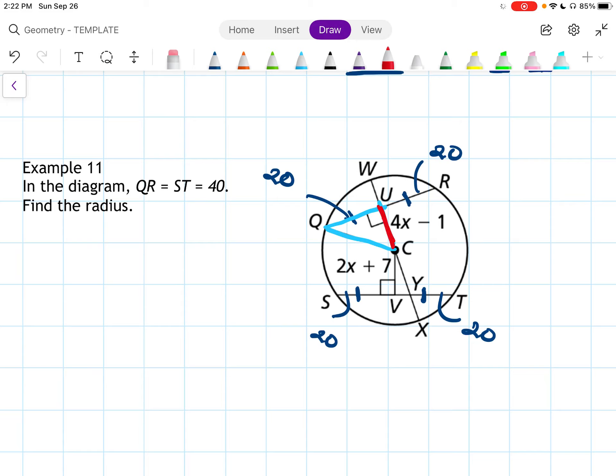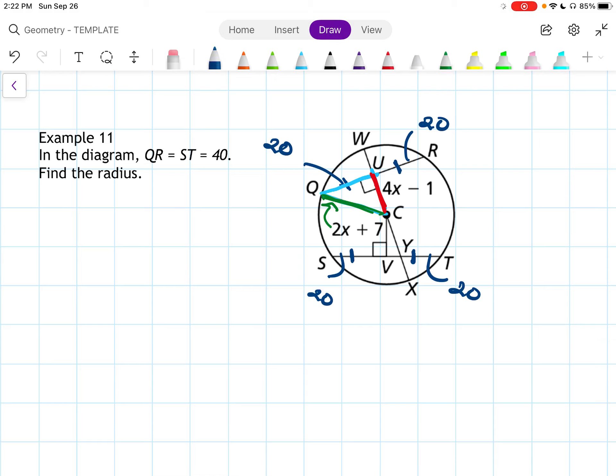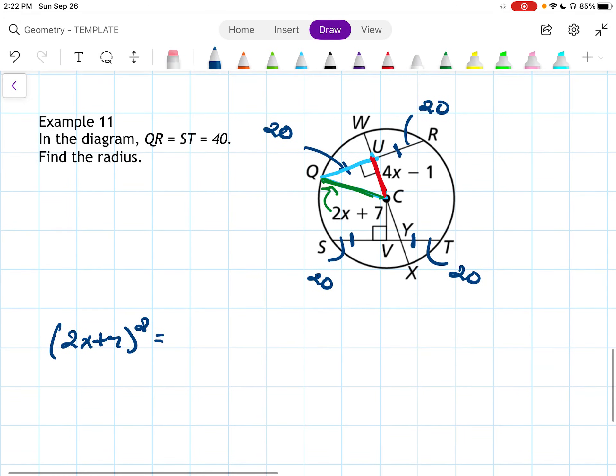We know that this piece of that radius is 4x minus 1, and we know that this is 2x plus 7. At least I'm pretty sure that this is supposed to go with that side. Let me look at the picture for another second. Yeah, that's the way we're supposed to do that problem. It's kind of hard to tell that that goes with that side. Now let's plug into the Pythagorean theorem there. So that's going to be 2x plus 7 squared. That's my hypotenuse squared equals 20 squared plus 4x minus 1 squared.